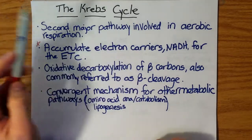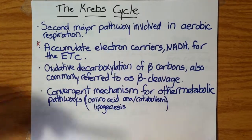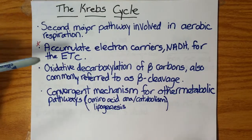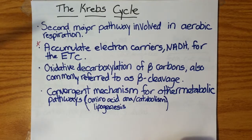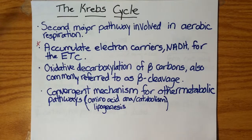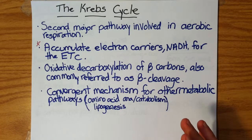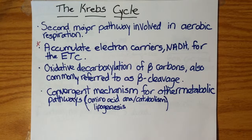To do this, we have to form the NADH and free up electrons that it can uptake. We go through a couple of series of oxidative decarboxylations. One of the most common ways we see that in nature is through beta cleavage, and that's exactly how we are going to decarboxylate our compounds in the Krebs cycle, through beta cleavage. You'll see that when we get to the reactions themselves.